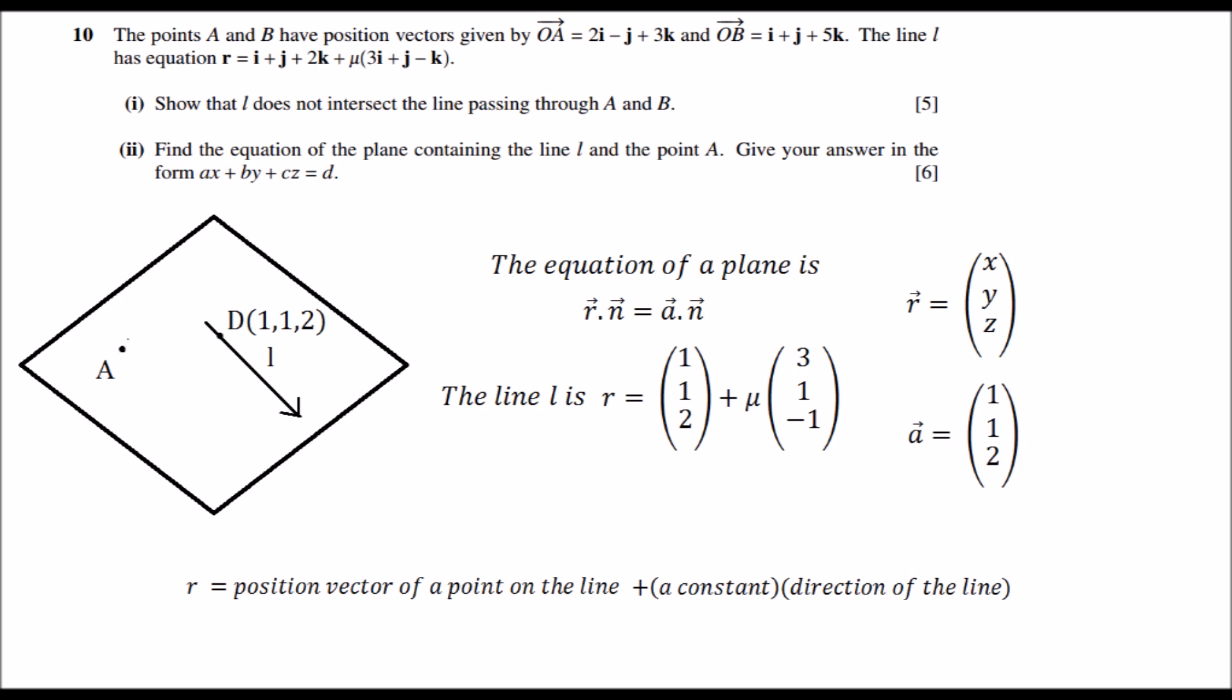A vector is the position vector of any point on the line. So since D lies on the plane, we can use the position vector of D as a. So a vector equals (1,1,2). You can also use the position vector of the point A since A also lies on the plane, but I will be using the position vector of D.